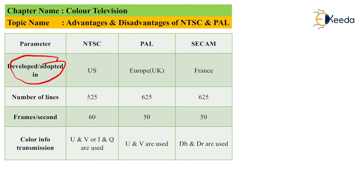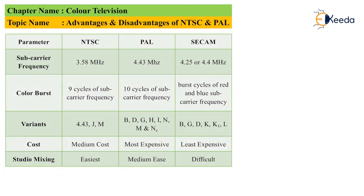For color information transmission: NTSC uses U and V (or I and Q), PAL uses U and V, whereas SECAM uses DB or DR. For subcarrier frequency: NTSC uses 3.58 megahertz, PAL uses 4.43 megahertz, and SECAM uses 4.25 or 4.44 megahertz. Based on subcarrier frequency, NTSC has the lowest frequency compared to PAL and SECAM. For color burst: NTSC uses 9 cycles of subcarrier frequency, PAL uses N cycles, and SECAM uses burst cycles of red and blue subcarrier frequencies.